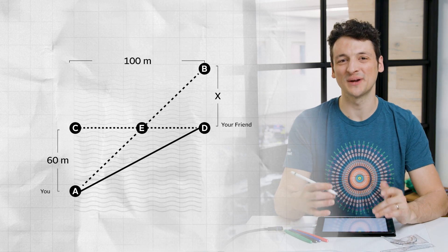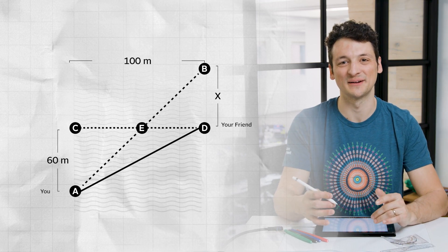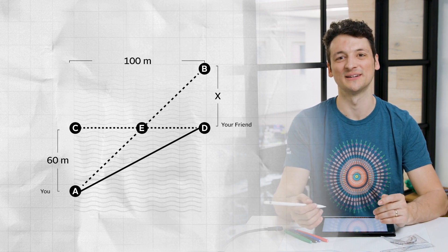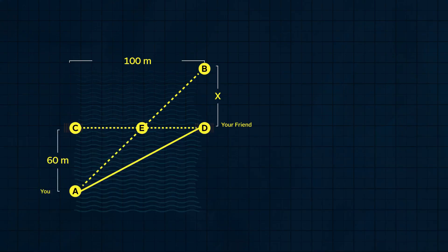Now we also know that the ratios of certain lengths in this diagram have to be equal because they are equal to the ratio of the speed of the boat to the speed of the river. These are CD over AC equals AB over BD.